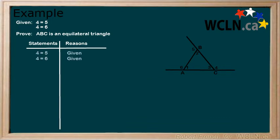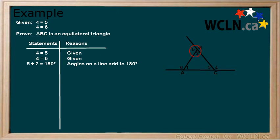Now, start with your given statements. Remember to always write down the statement and reason. The fact that other angles are labeled suggests that you will need these as part of your proof. Therefore, let's begin by writing down what we know. We know that angles on a line add to 180 degrees, so angle 5 plus angle 2 equals 180 degrees, and angle 3 plus angle 4 equals 180 degrees.